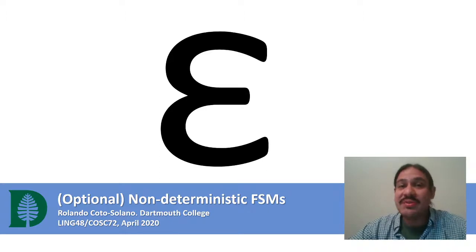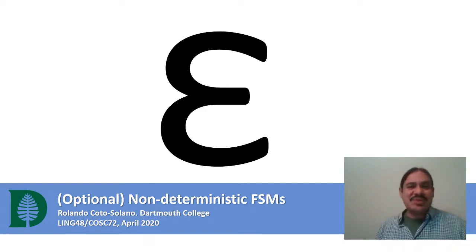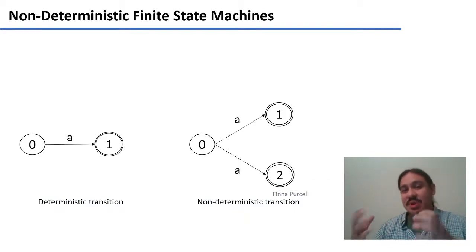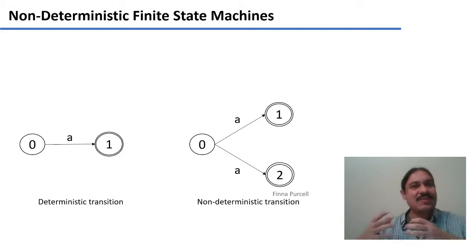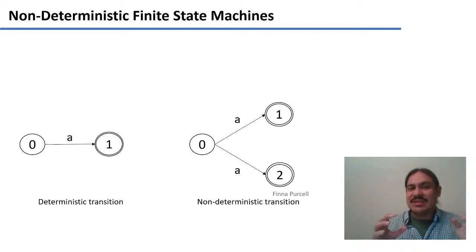This is an optional topic on theory of computation. We're going to talk about deterministic and non-deterministic finite state machines. There are many types of automata and we're going to talk about a few of them in the video about the Chomsky hierarchy. We started with one of the simplest types of automata, a finite state machine.